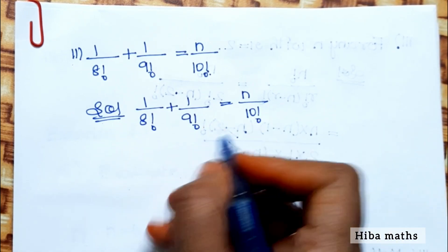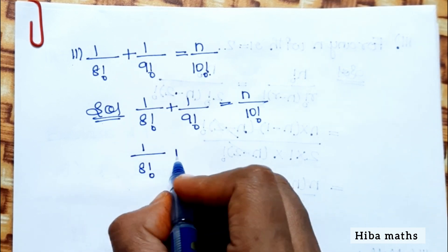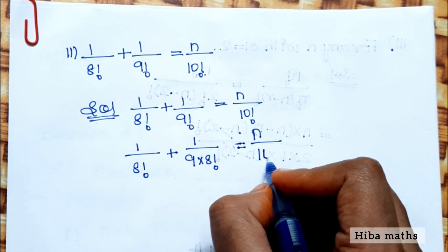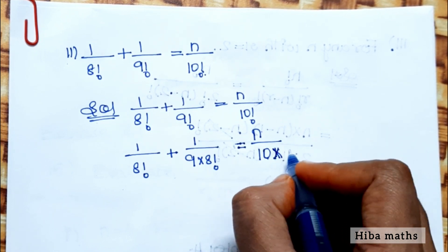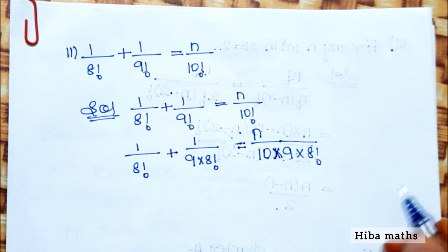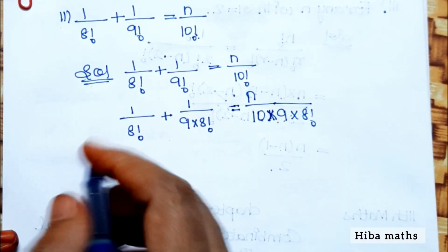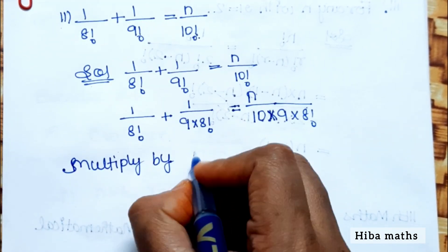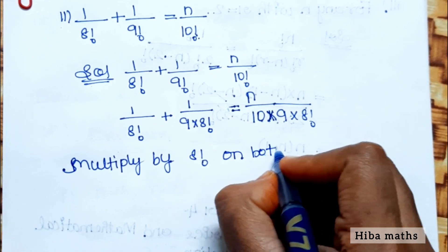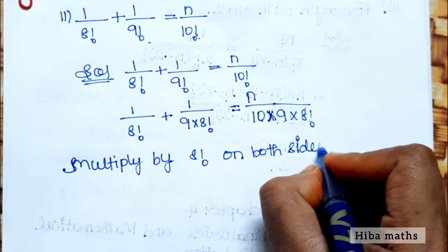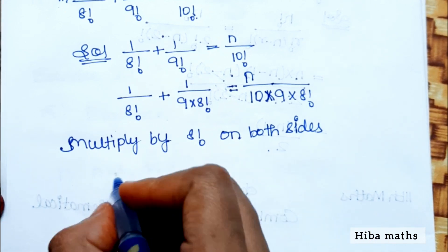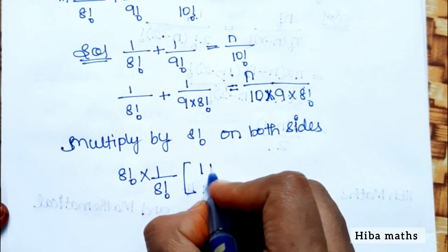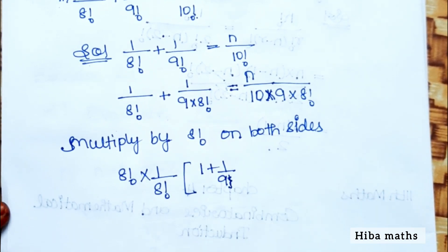Taking 8! as common, we multiply both sides by 8!. On the left side, 8! divided by 8! gives 1, and 8! divided by 9! gives 1/9. On the right side we get n times 8! divided by 10!.